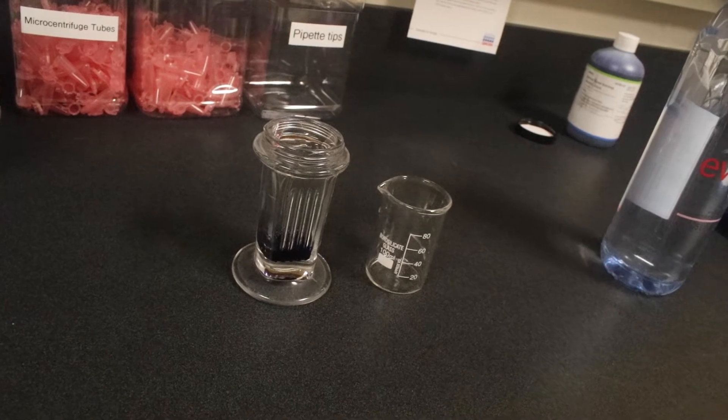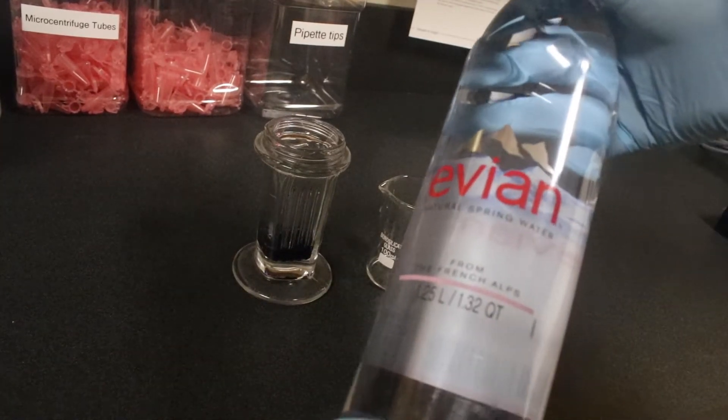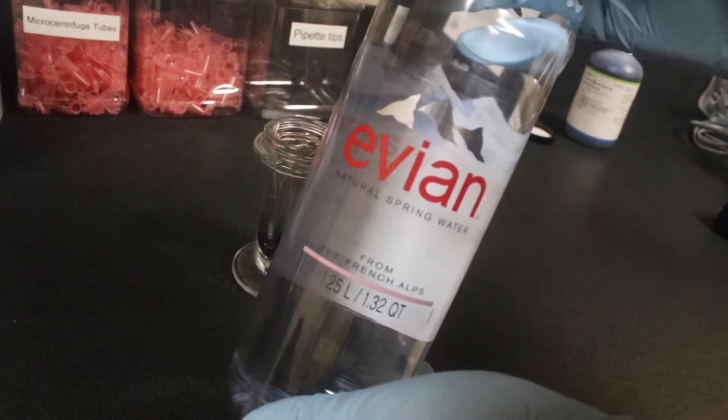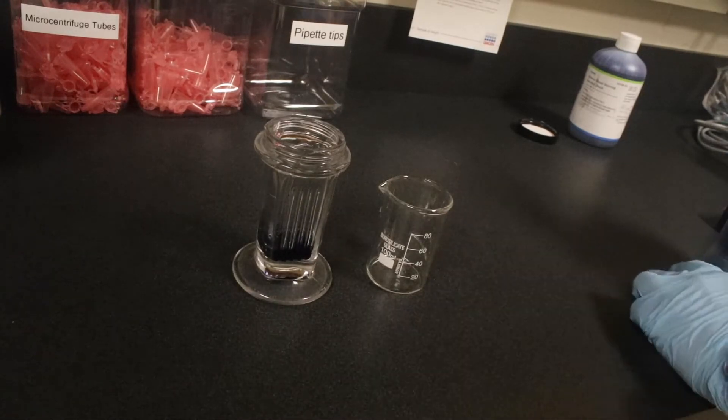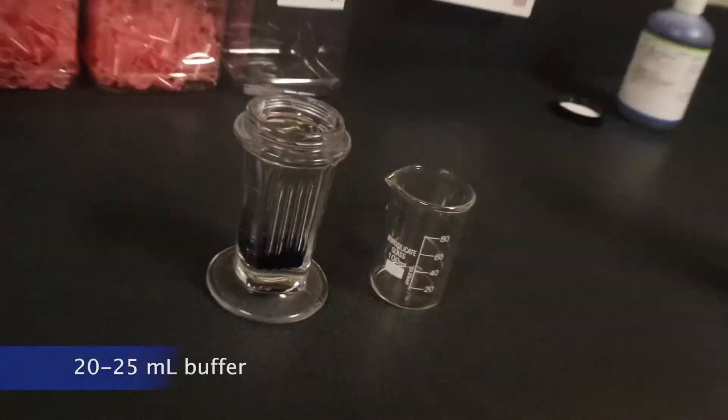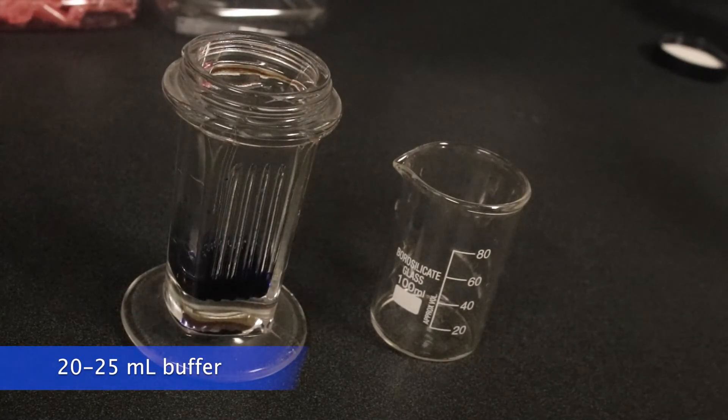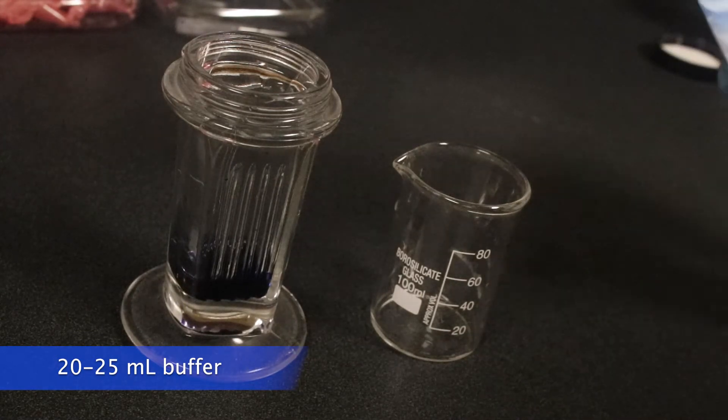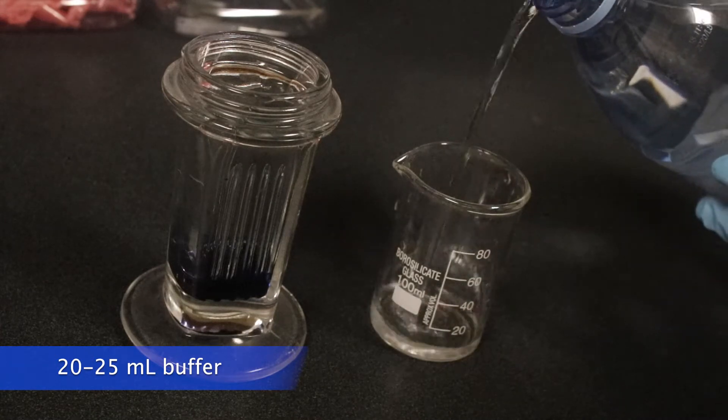Next we're going to add the buffer. So, grab the bottle of Evian water, and into a small flask, a 100 milliliter flask, pour out 20 to 25 milliliters of Evian water, and then we can pour that in with the Yamsa concentrated stain.